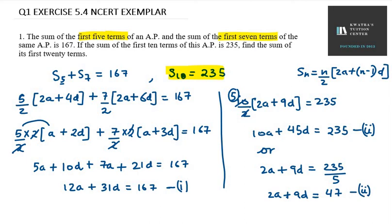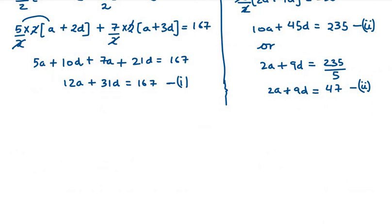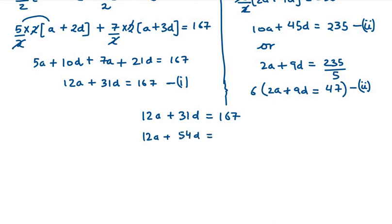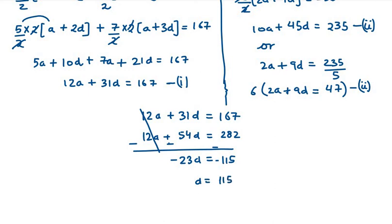Now we solve the two equations simultaneously. Equation one is 12a + 31d = 167. Multiplying equation two by 6 gives 12a + 54d = 282. Subtracting equation one from this, the 12a terms cancel, leaving −23d = −115, so d = 115/23 = 5.